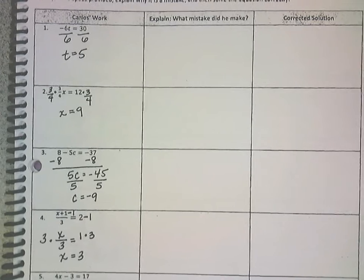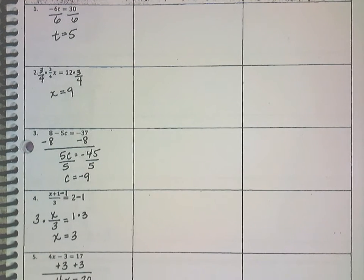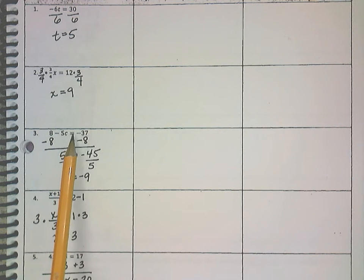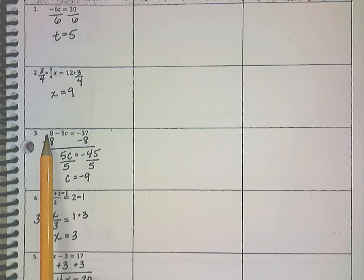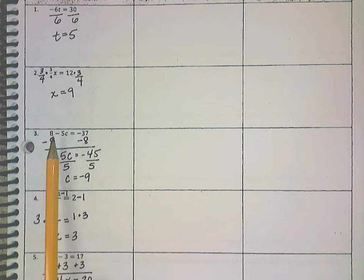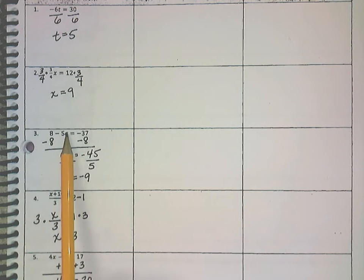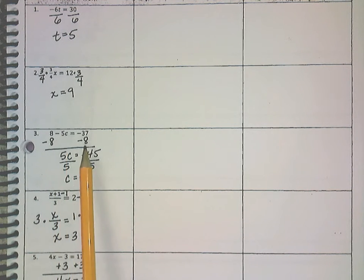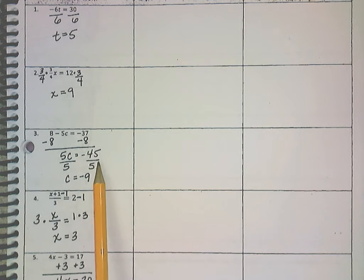So we're going to go down to number three to see what Carlos's mistake was. He had the equation: 8 minus 5c equals negative 37. This is a positive 8, so he subtracted 8 from both sides. Okay, then what's left on this side is negative 5c, and negative 37 minus 8 is negative 45.